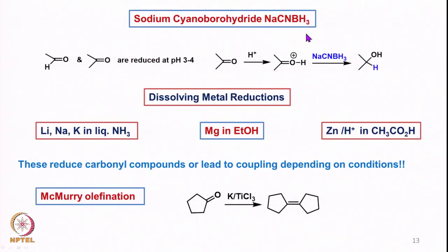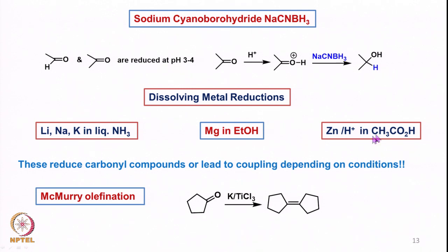Then we saw sodium cyanoborohydride, which can allow reduction of aldehydes or ketones under acidic conditions because it is stable under acidic conditions. Then we saw dissolving metal reductions using monovalent or bivalent metals, and finally we saw McMurray olefination using titanium-based reagents. In those cases we saw whether reduction or C-C bond formation occurs when using monovalent or bivalent metals, and in the McMurray case, coupling of carbonyls also occurs.